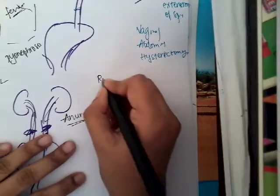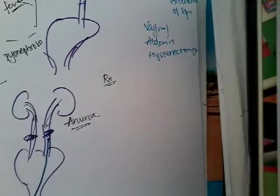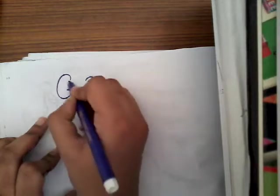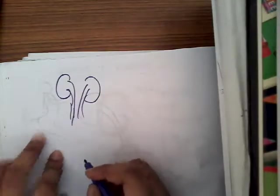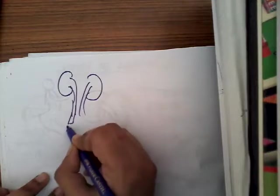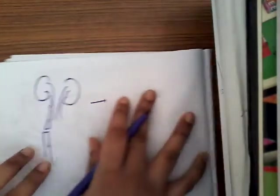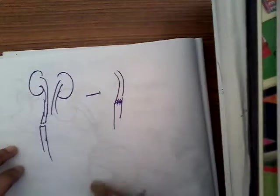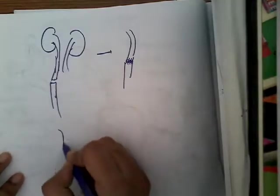How are we going to repair it? The repair of the ureter mainly depends upon the length of the loss of ureter. If this is the kidney and this is the ureter, and there is only a small loss in length, in such cases you can just anastomose it with sutures.